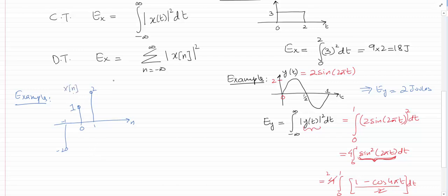Now to find the energy of this signal, I have to use this formula, which says that Ex is going to be equal to the sum from n equals minus infinity to infinity of |x[n]|².